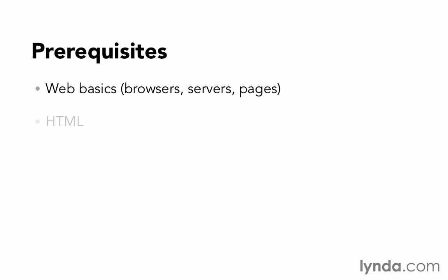You also need to understand HTML — it is the fundamental language of the web and everything we do in Ruby on Rails is going to output HTML, so it's essential. I also think it's good to have a solid understanding of SQL. You don't need to be an expert, but you need some essential SQL, such as understanding what it means to join two tables together using a foreign key.